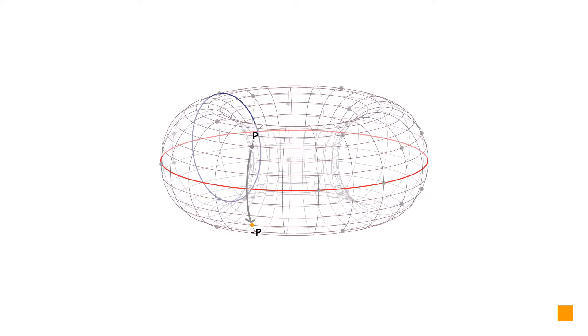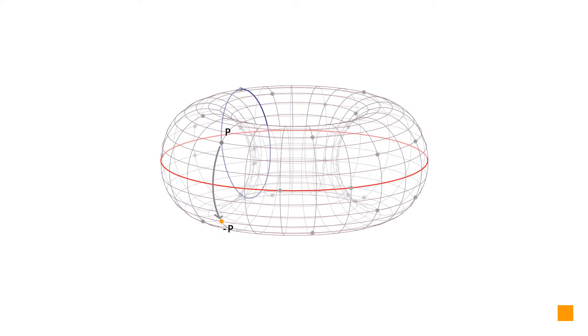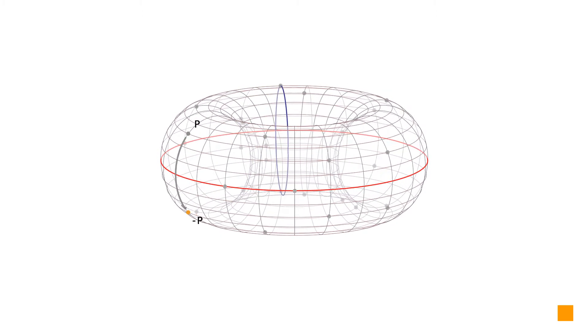This is similar to negating the y-coordinate, but actually it means we have to subtract the original y-coordinate value from the size of the field.